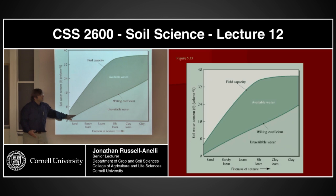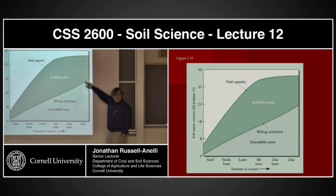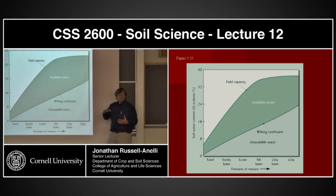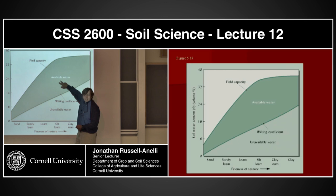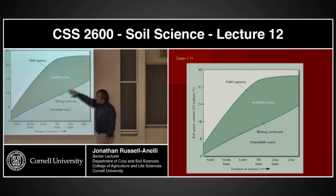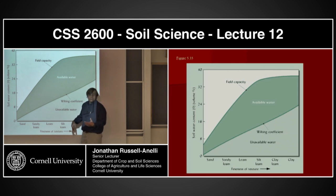Clays, on the other hand — out here there's a lot of water still in that clay, but the plants can't get it out because the matrix potential is so high. The take-home message of this slide is actually look at the area of the available water. Where is it in fact maximum? It sits in here — somewhere in the loam range.